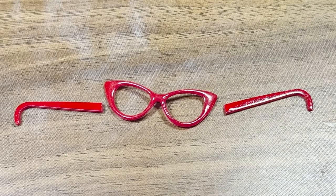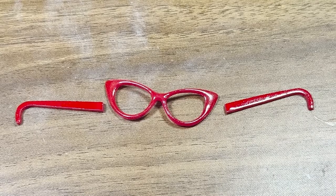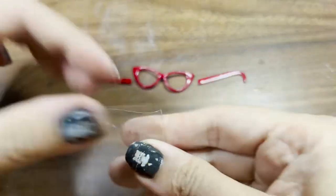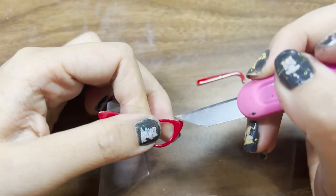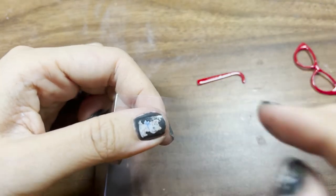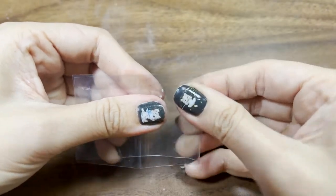After making the frame, you can spray paint it any color you like. For the lens, use this piece of clear plastic. Fold it like this and put it on the back side of the frame. Then, mark the outline on the other side and fold it into the shape like this.